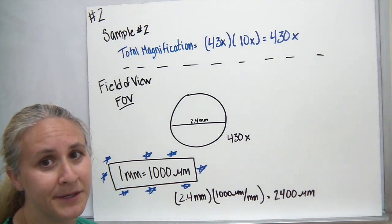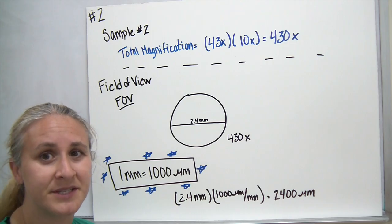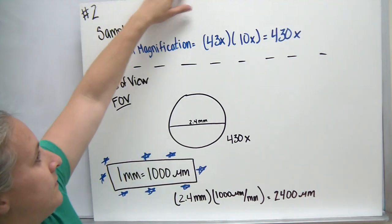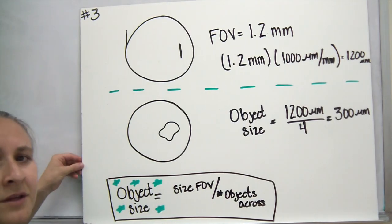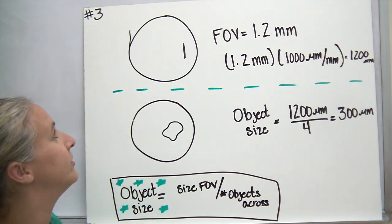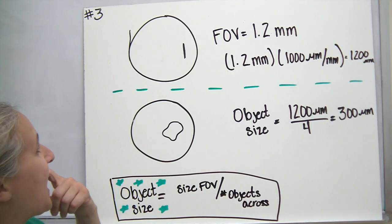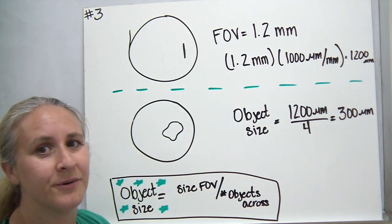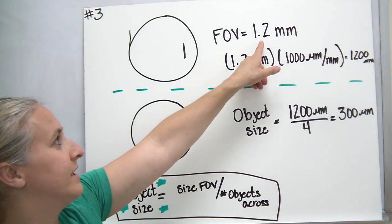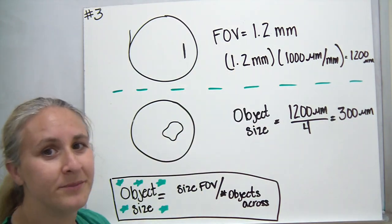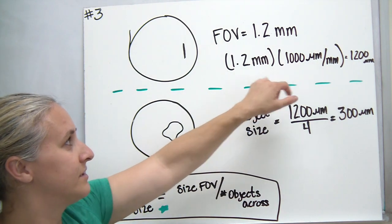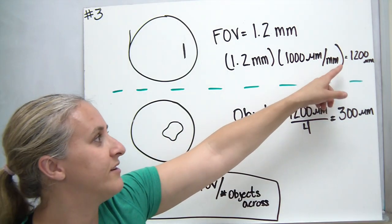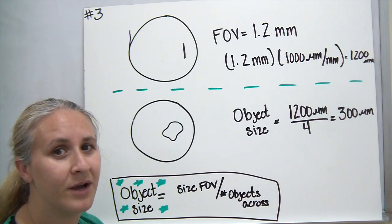Why don't you try the practice problem in your packet — hit pause, and when you're done press play again and we'll see how you did. In the practice problem, we measured a field of view of 1.2 millimeters. To convert to micrometers, multiply by 1,000: 1.2 times 1,000 gives an answer of 1,200 micrometers.